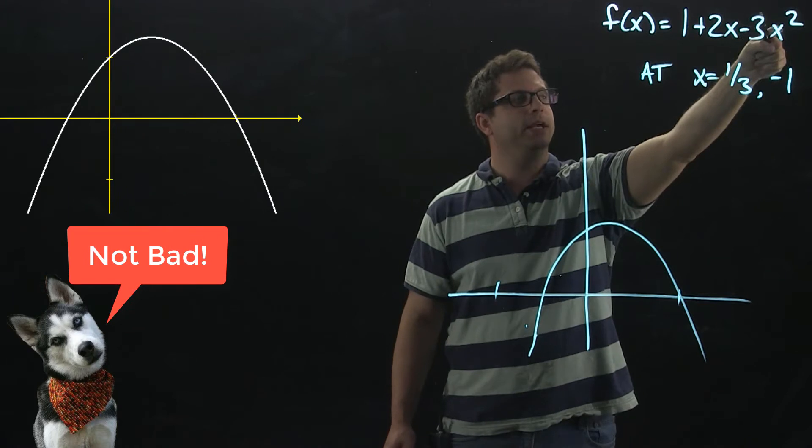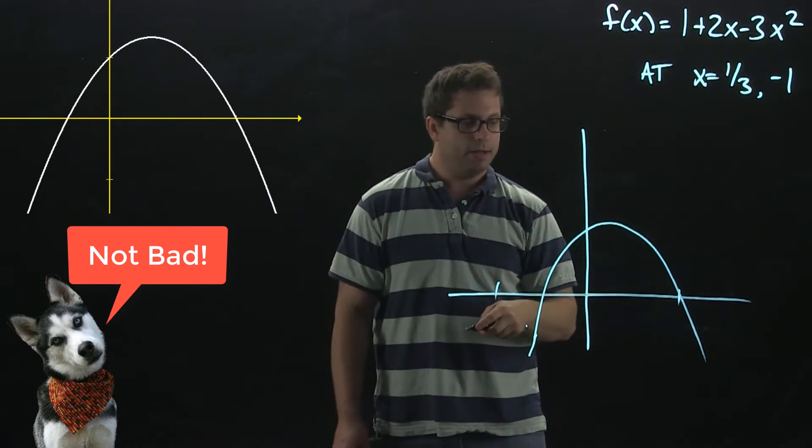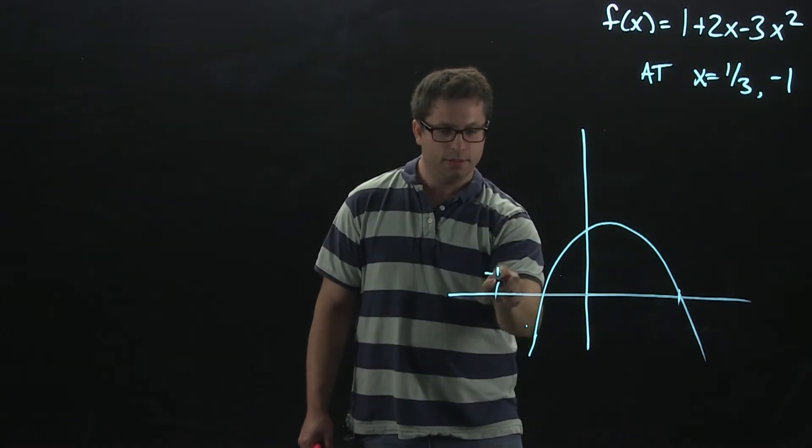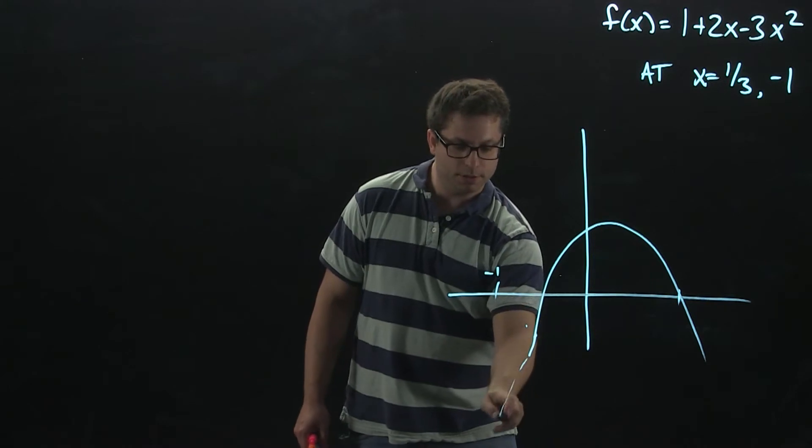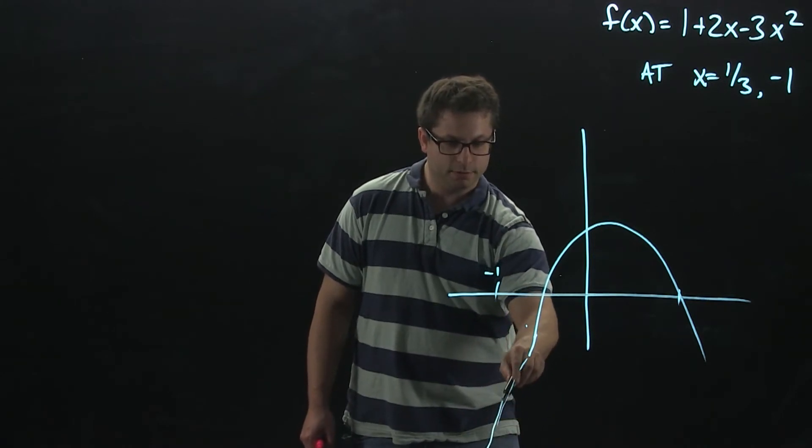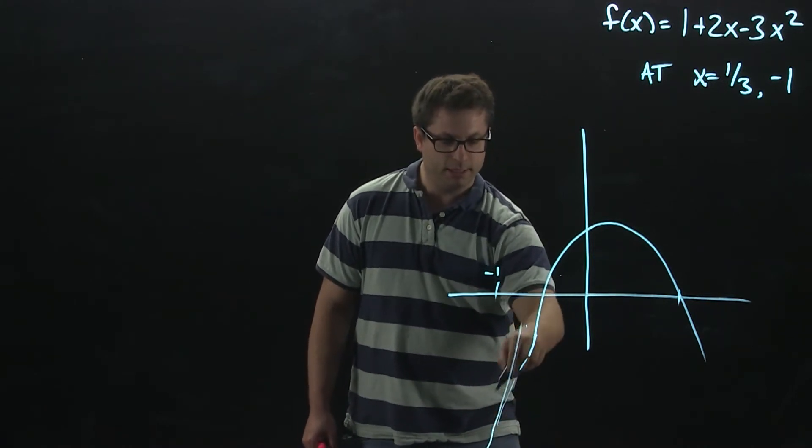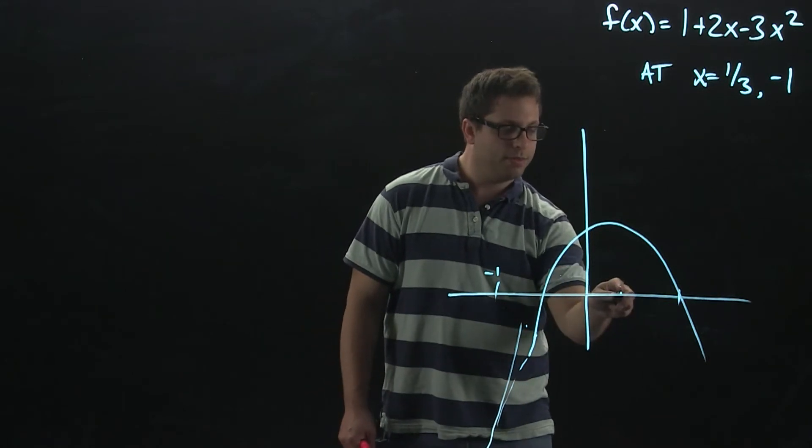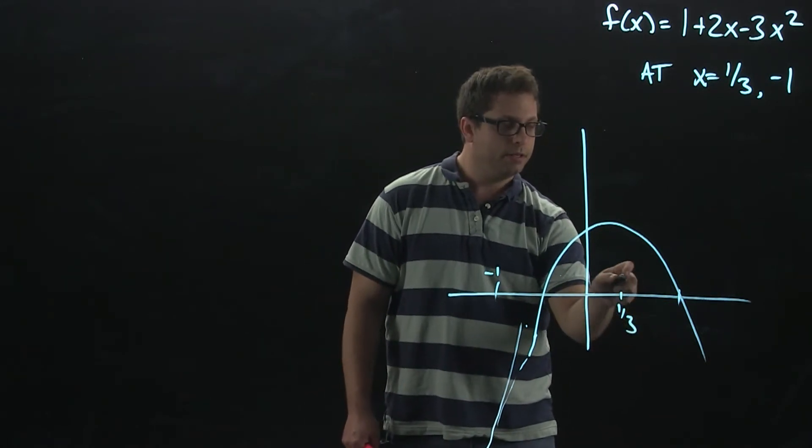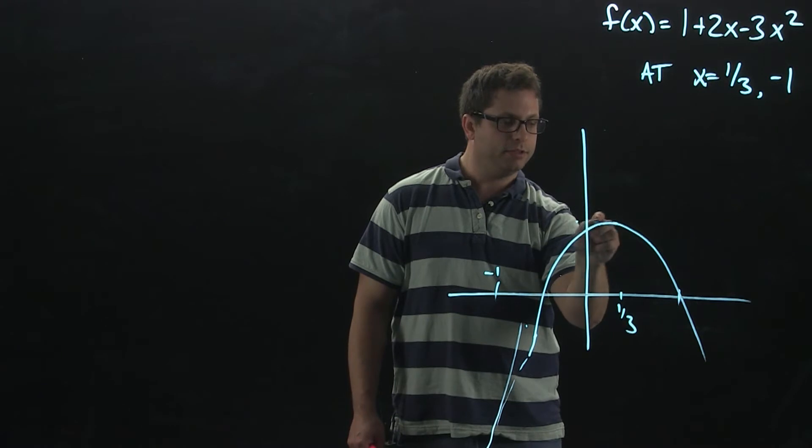It does open down because of the negative 3 on the x squared. Now negative 1 is down over here, so the slope is going to be positive and fairly steep. Then at 1/3, it does kind of look like we're going to have a slope of 0.